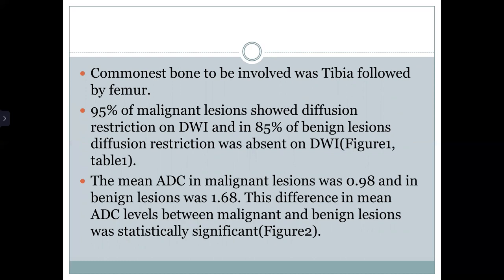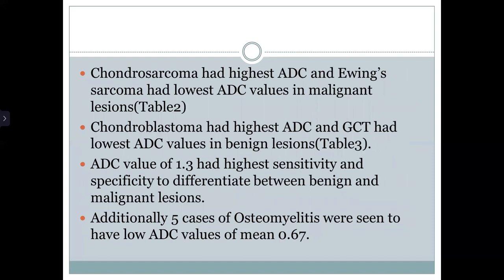95% of malignant lesions showed diffusion restriction on DWI, and in 85% of benign lesions diffusion restriction was absent. The mean ADC in malignant lesions was 0.98 and in benign lesions was 1.68. The difference in ADC between malignant and benign lesions was statistically significant. Chondrosarcoma had the highest ADC and Ewing's sarcoma had the lowest ADC among malignant lesions. An ADC cutoff value of 1.3 had the highest sensitivity and specificity to differentiate between benign and malignant lesions. In 5 cases of osteosarcoma, a low mean ADC value of 0.67 was seen.